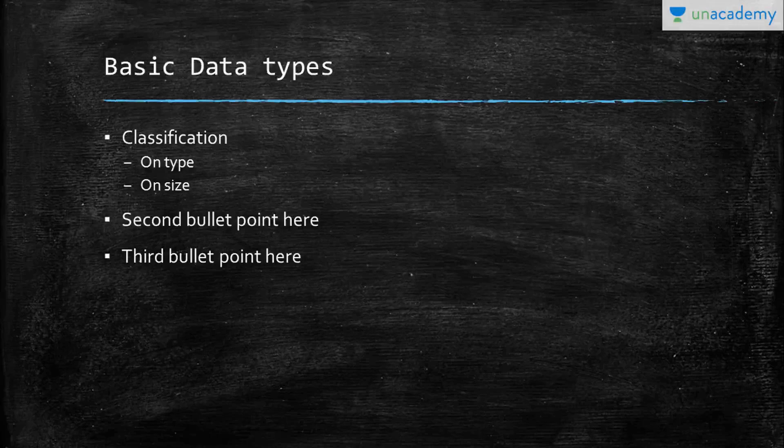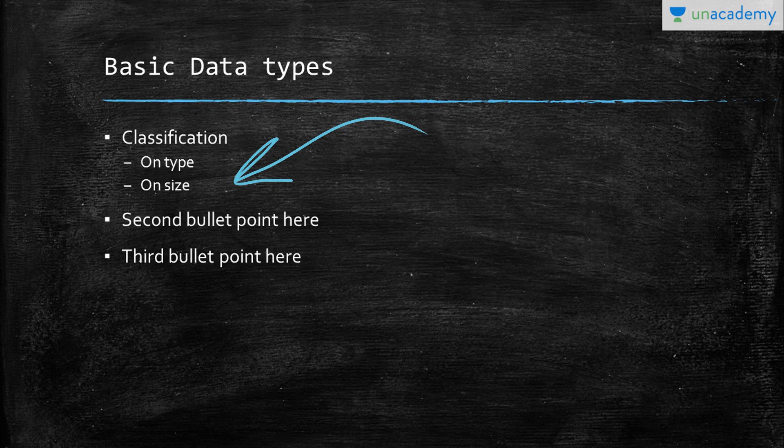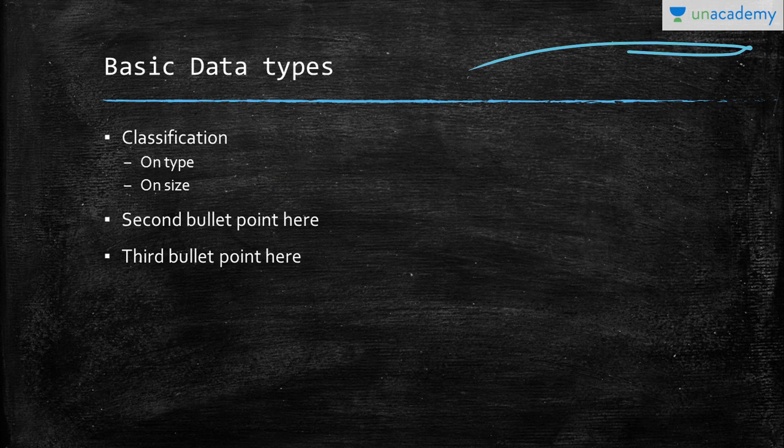Basic data types - yes, we can classify them on the basis of type. So type can be what kind of data we want to put in. For example, I want to put a name, I want to put Unacademy in it. So it's called a string, so I need to define a string data type.